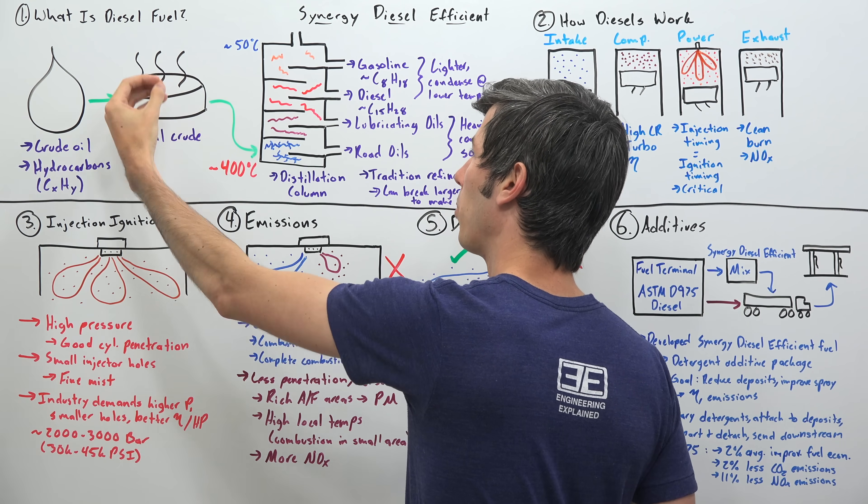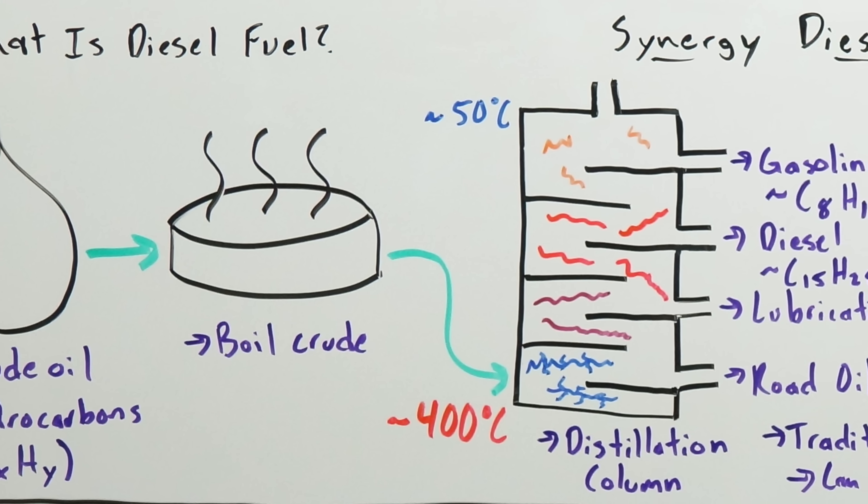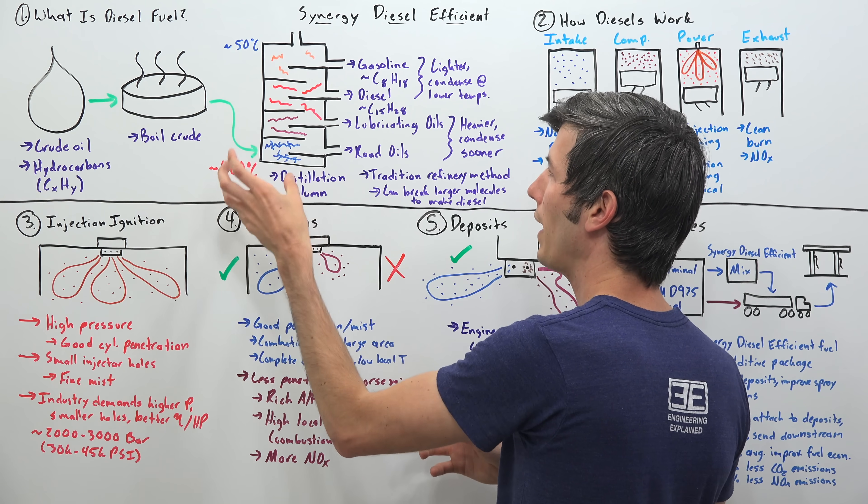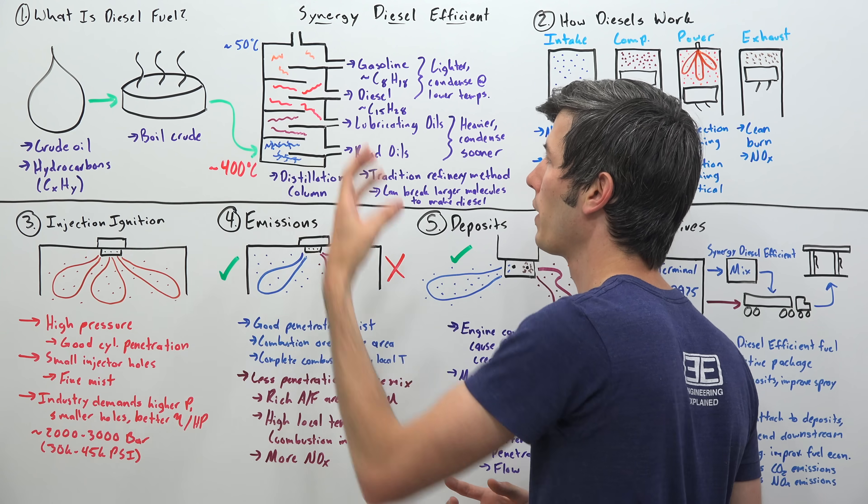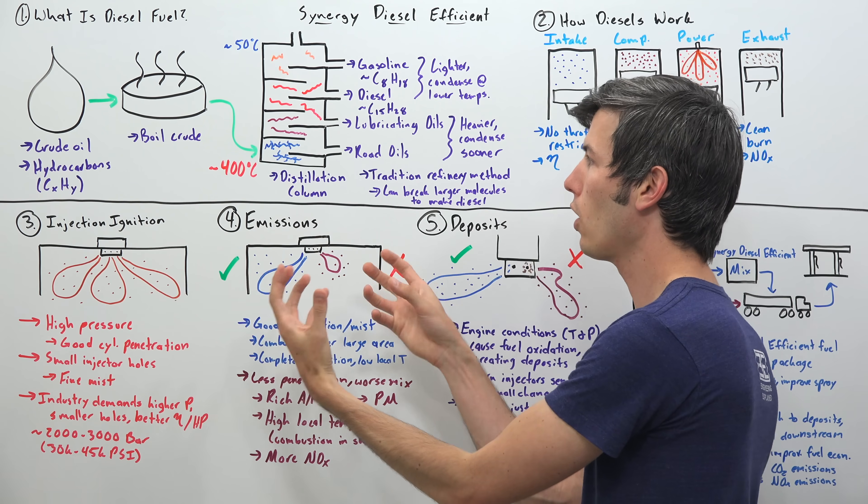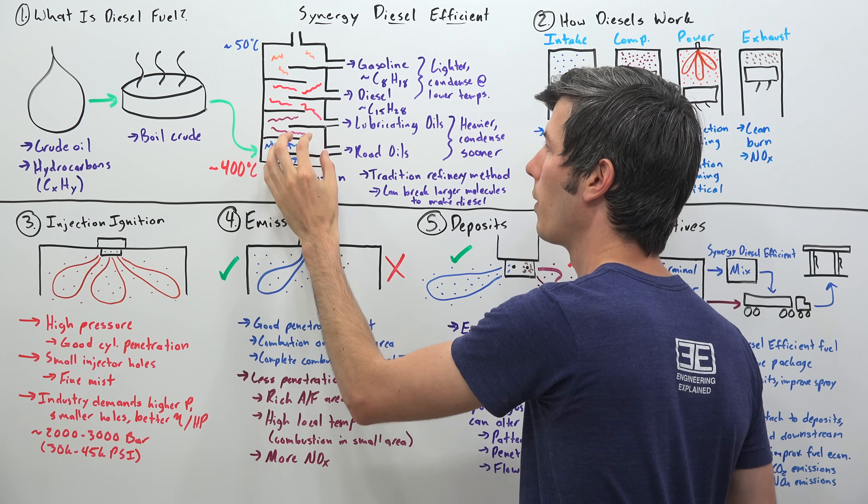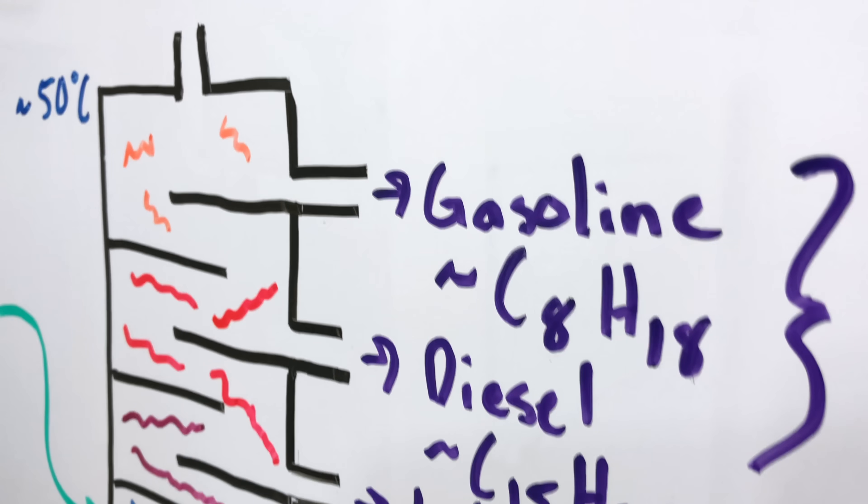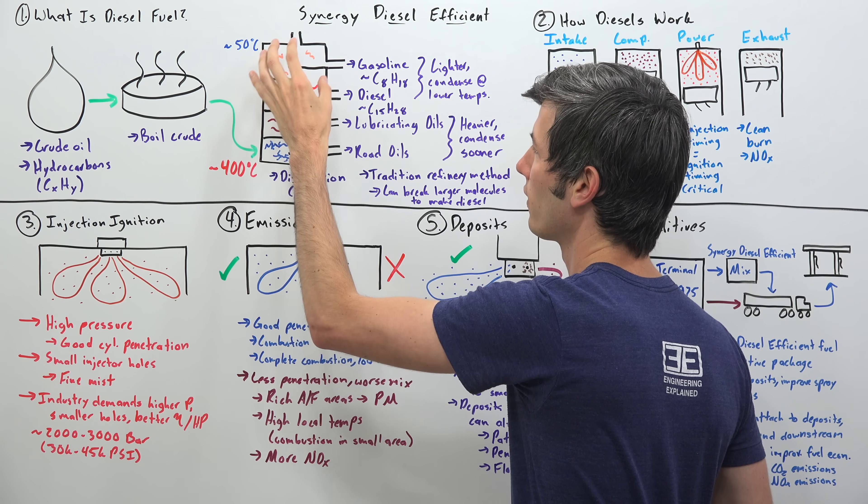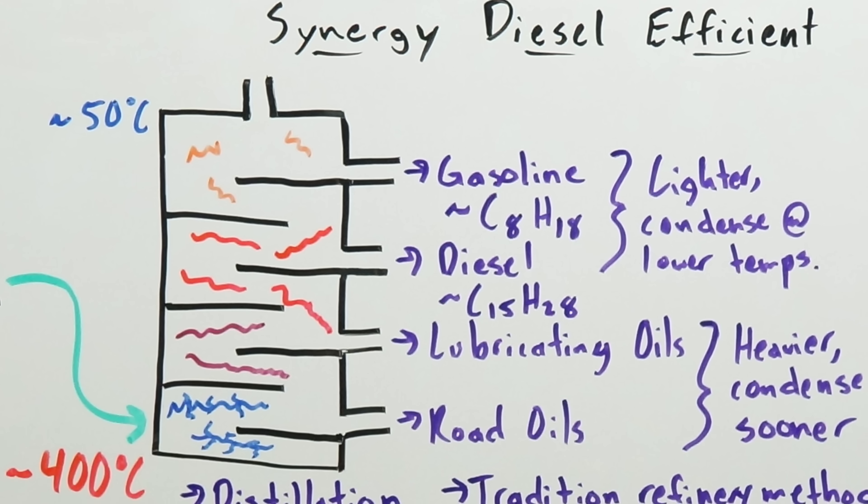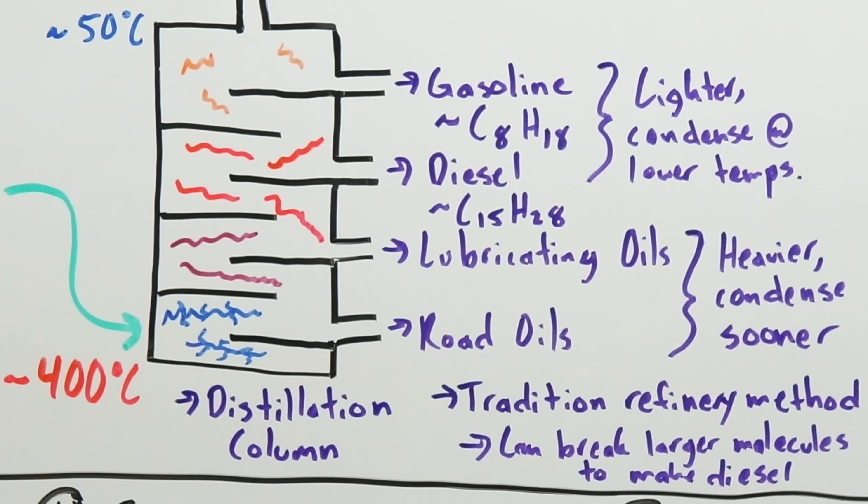So you take crude oil, you then boil that crude heating it up to quite high temperatures, and then you send it through a distillation column. This distillation column is warmer at the bottom and cooler at the top. So as you have this gaseous oil flowing through this distillation column, the heavier longer molecules will condense sooner at higher temperatures, meaning they'll separate out towards the bottom versus those smaller lighter hydrocarbons. They won't condense until much cooler temperatures. So they raise up much higher within this distillation column. And so you're able to separate out the different hydrocarbons at different layers.